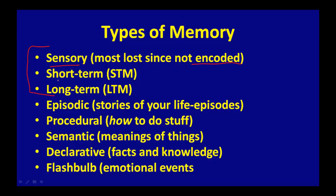You have short-term memory — you have the magic number 7 plus or minus 2. Those are the bits of information you keep in your working memory at any given point in time. Then you've got long-term memory — information that you can store in your cerebral cortex that hopefully you can access at some point in the future given the right cues and the right context.